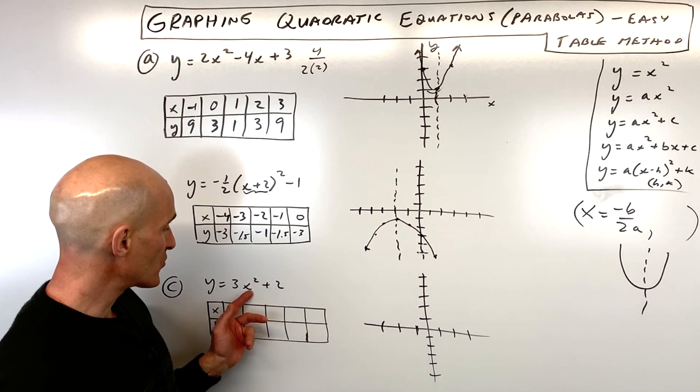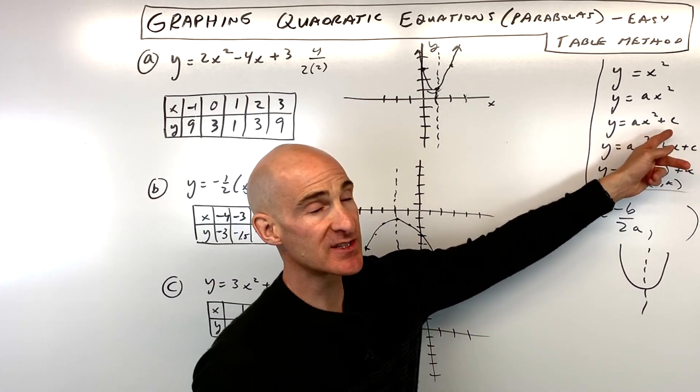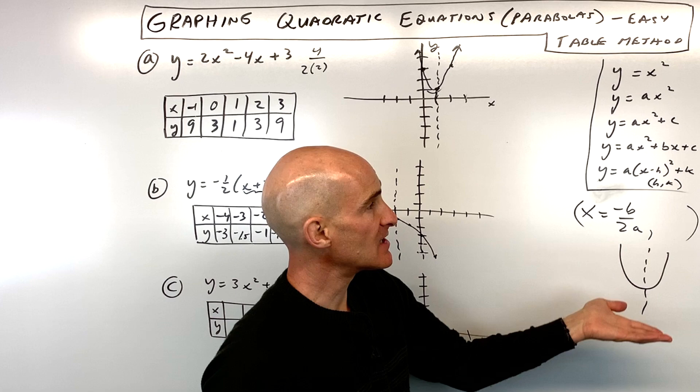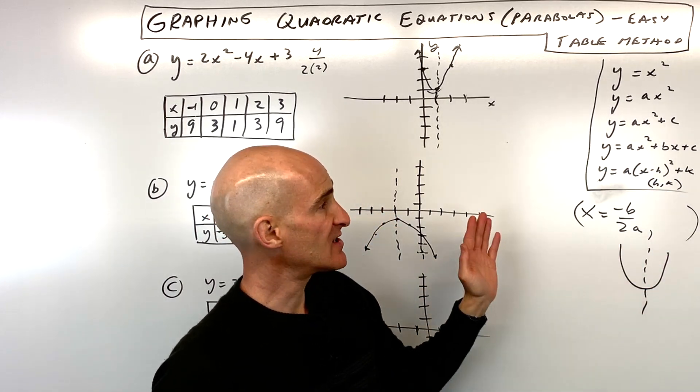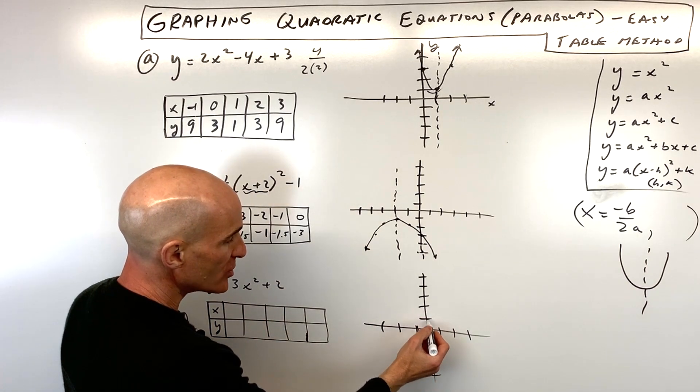Okay, last example, y equals 3x squared plus 2. This is in this form here, y equals ax squared plus c. And what the c does is it picks the graph and it moves it up and down. It's not shifting it left or right.